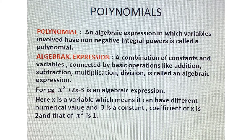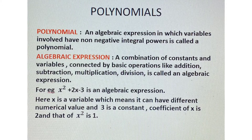First of all, let us see the definition of a polynomial. An algebraic expression in which the variables involved have non-negative integral powers is called a polynomial. So a polynomial is an algebraic expression in which variables have powers which are natural numbers. No algebraic expression, variables — all these terms are new to you, so we are going to study them one by one.